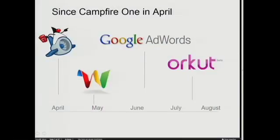The last time we did a campfire and talked about some of the features in Google Web Toolkit was about eight months ago, back in April. The team has been working before, during, and since then, enhancing Google Web Toolkit, and we've been using it a lot internally here at Google. At Google I/O back in May, we released Wave, which was built on top of Google Web Toolkit.